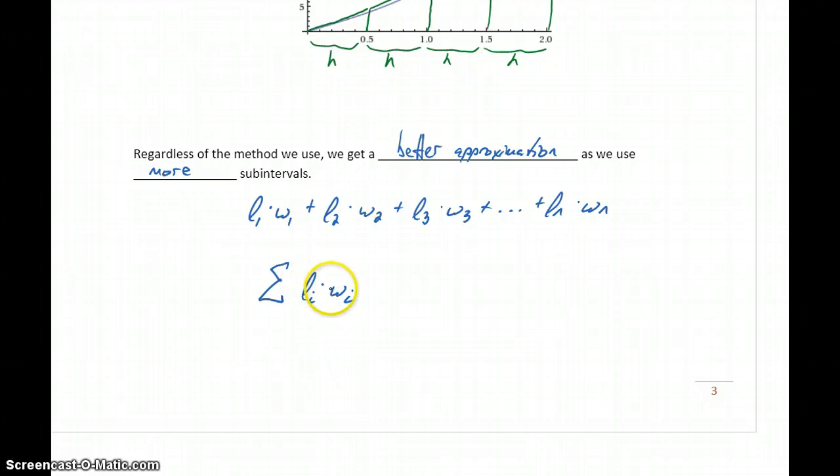We're going to take the length and the width, plus the length and the width, plus the length and the width, for values of i going from 1 to n.